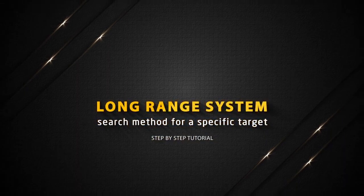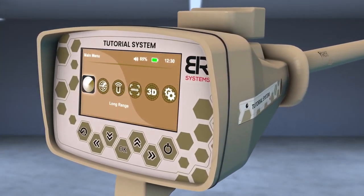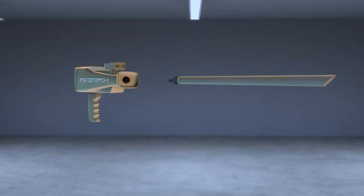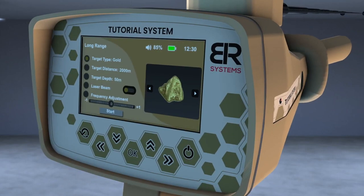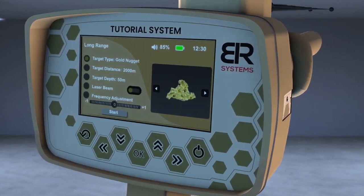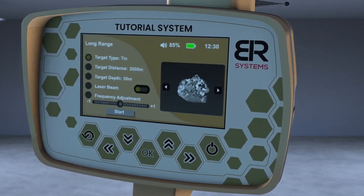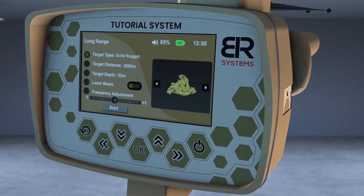Long range system search method for a specific target. Turn on the device. Then choose the long range icon from the main screen. Install the PowerMax 25 sensor at the designated entrance. Tighten the clamp well and then install the antennas in its place. A screen will appear to specify the characteristics of the target before the search process. Select the target to search for using the right and left arrows from the screen interface.